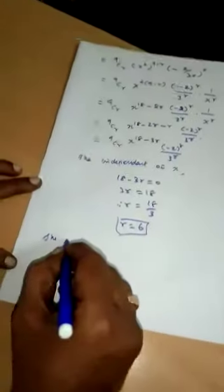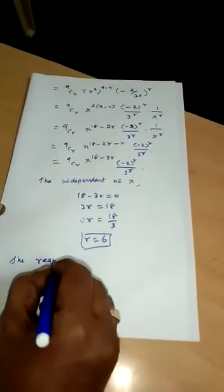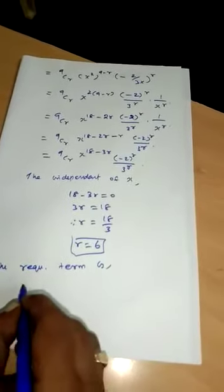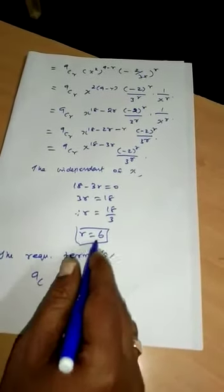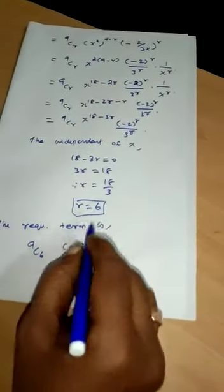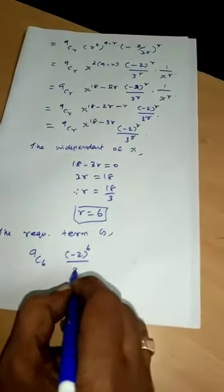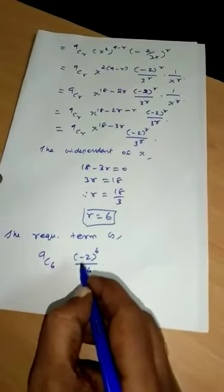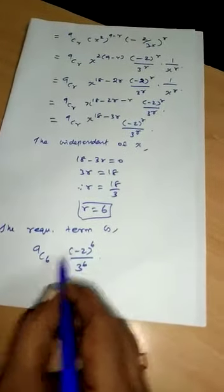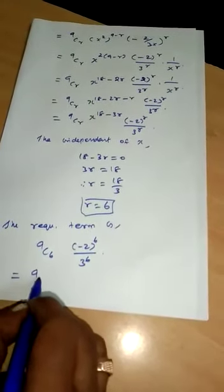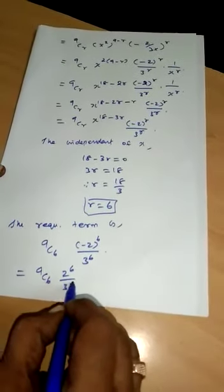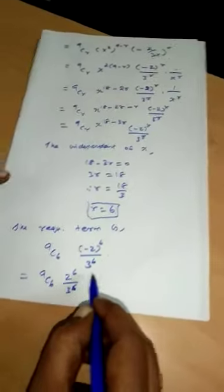The required term is 9C6 · (-2)^6 / 3^6. Since (-2)^6 is positive, this becomes plus 9C6 · 2^6 / 3^6, which is the required term independent of x.